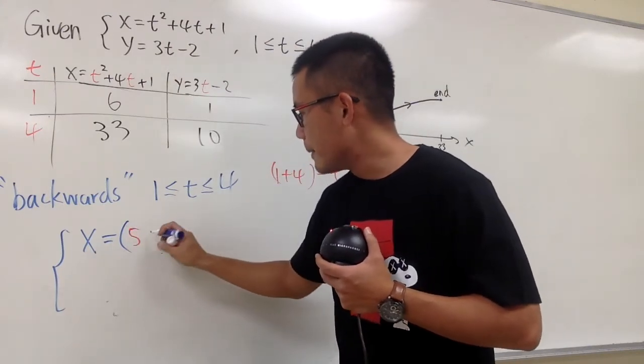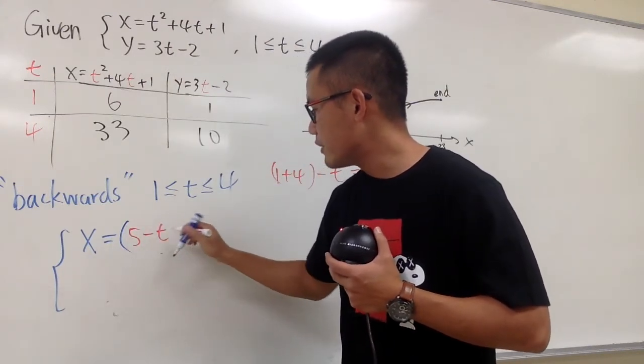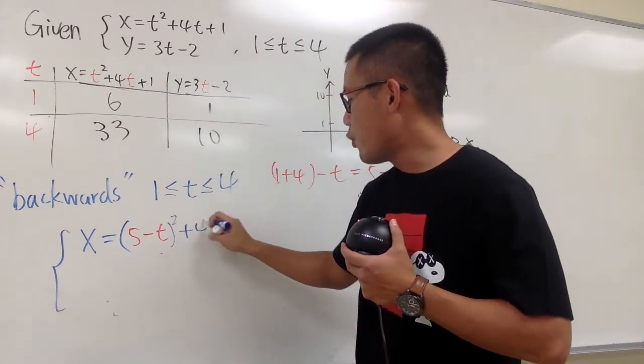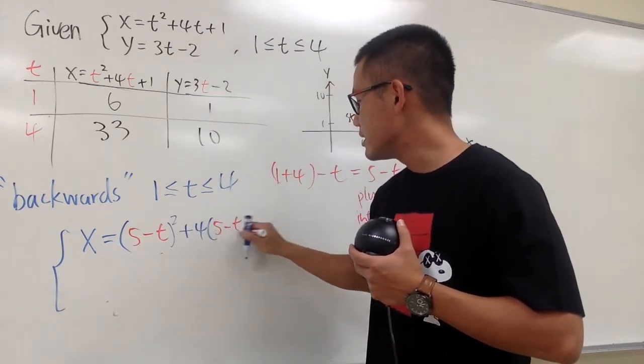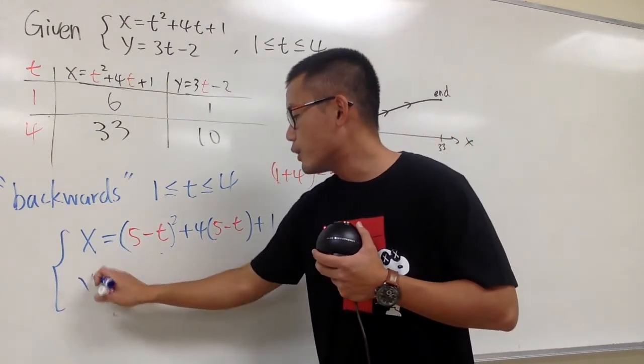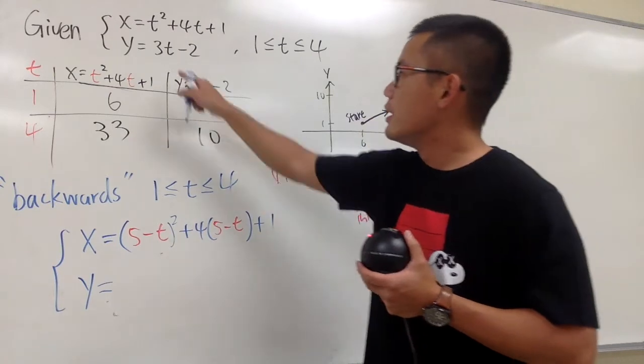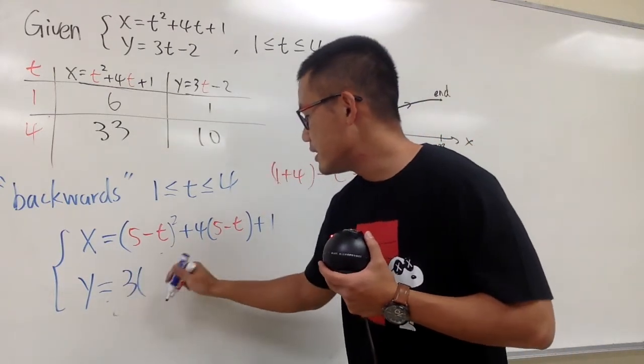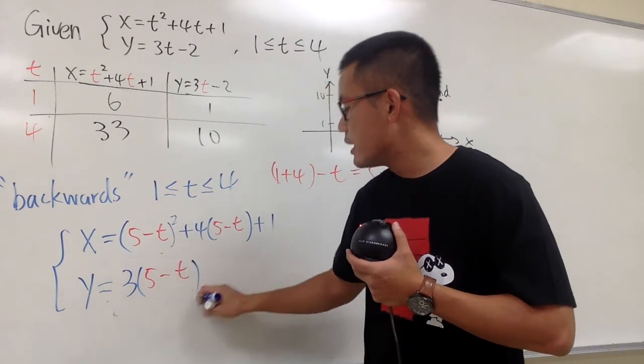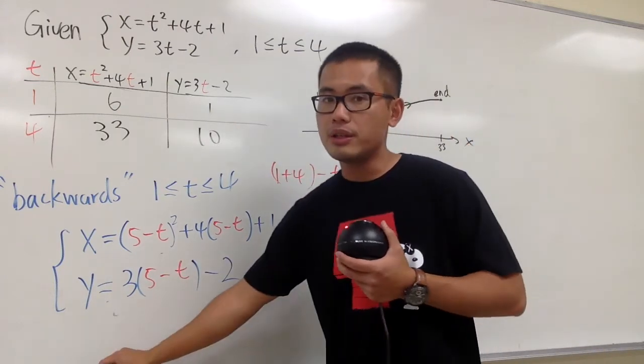So inside here it will be 5 minus t. Let me just put down everything in red, and then square, and then plug in here as well, so plus 4 times 5 minus t. And then at the end, put down plus 1. And then for the y equation, this is going to be the same thing. We will have 3. When I see the t, I will plug that into, I will change that to 5 minus t, and then minus 2. That's pretty much it.